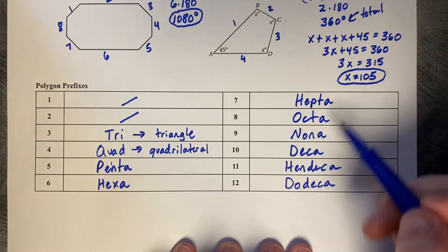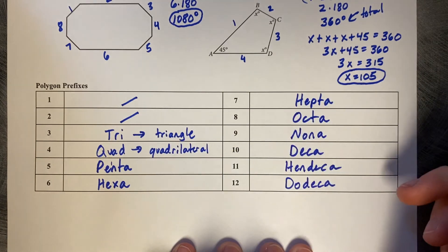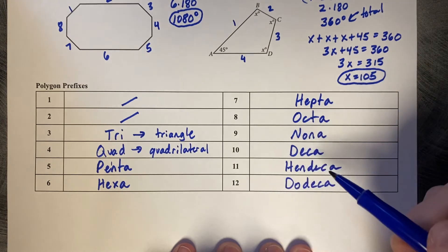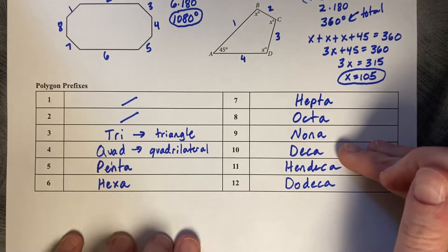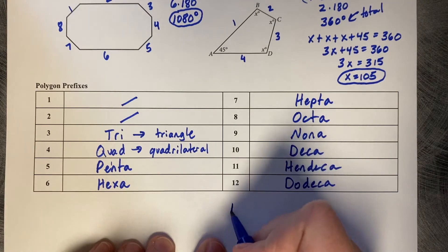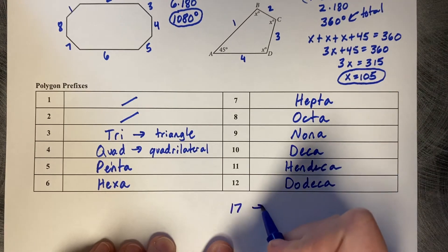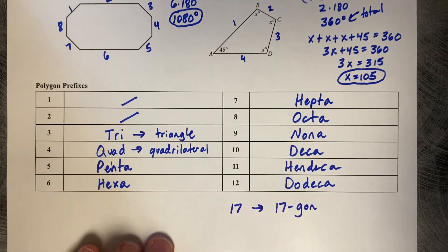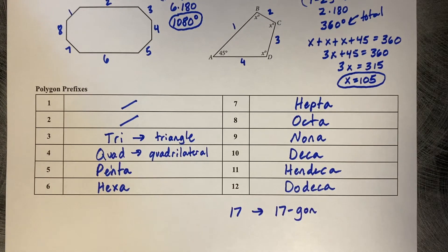So these prefixes, you should start to memorize these one through twelve. There are prefixes for sides larger than twelve. These are the ones we're mostly going to work with. If you get above that, let's say you get into the seventeen-sided figure, most of the time we just call that a seventeen-gon. You don't need to call that with its prefix.